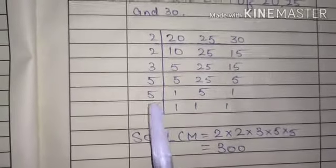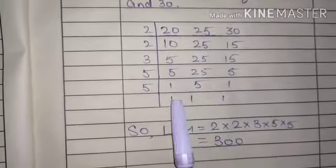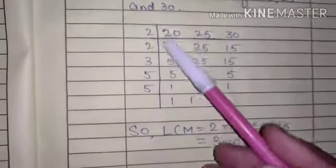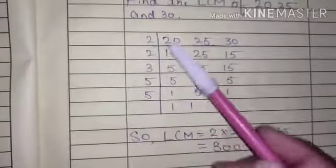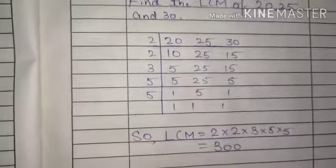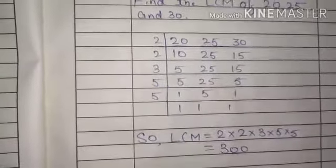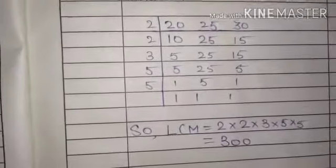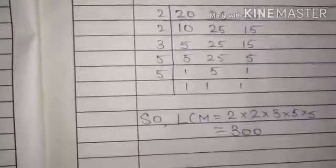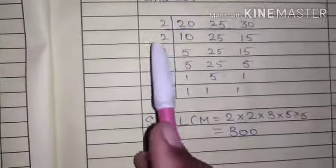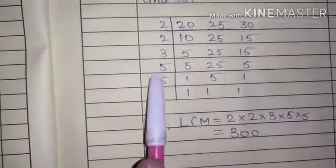If you want to solve these numbers, then you will have direct LCM. LCM is equal to 2 × 2 × 3 × 5 × 5.